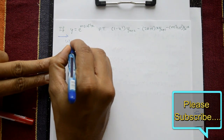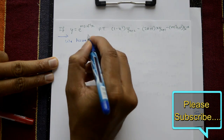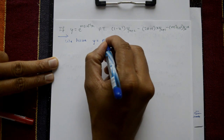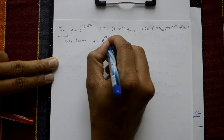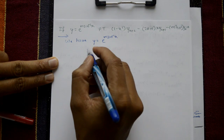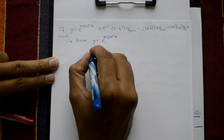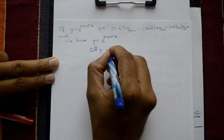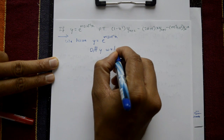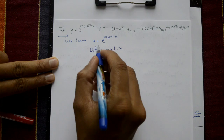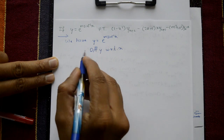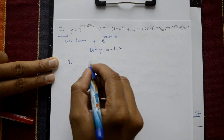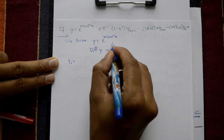Solution: we have given y is equal to e to the power m sine inverse x. Now, differentiate y with respect to x. This becomes y1. y1 is equal to, differentiate right hand side.